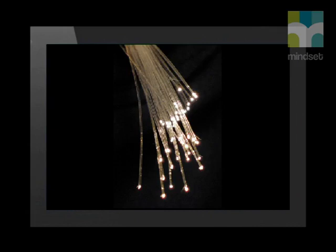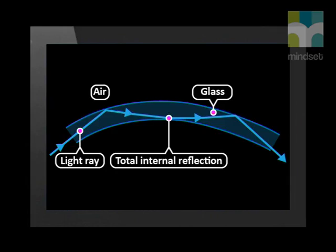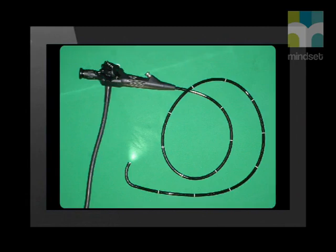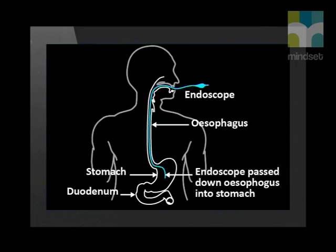Now let us see how total internal reflection could be useful to us. Optical fibers are very thin fibers of glass or plastic, about 0.1 mm in diameter. These optical fibers can be used to transmit light using total internal reflection. They are very useful because they are flexible and the light will stay inside them even if they are bent. In medicine, they can be used as an endoscope to view the inside of the body. A doctor can insert the endoscope tube down a patient's mouth and throat and slide it into the stomach to see if surgery is needed.